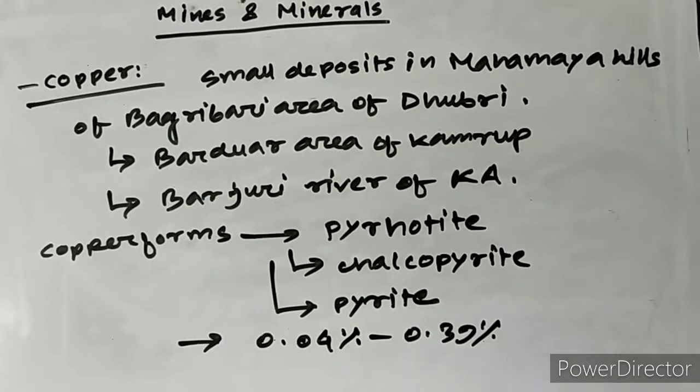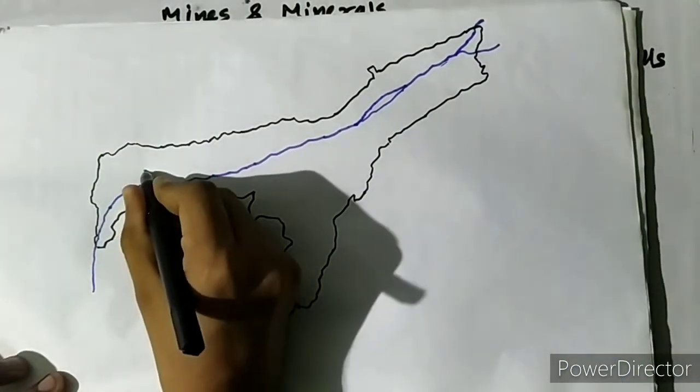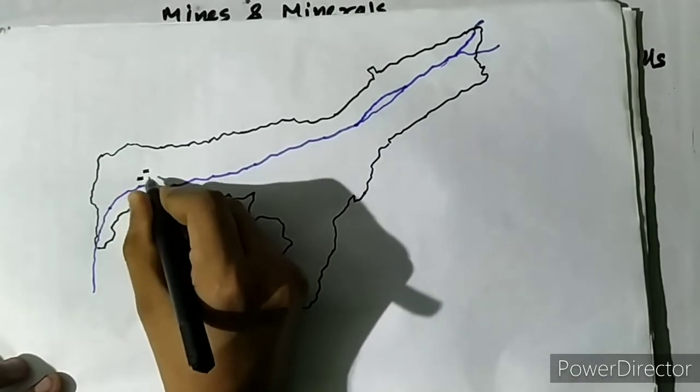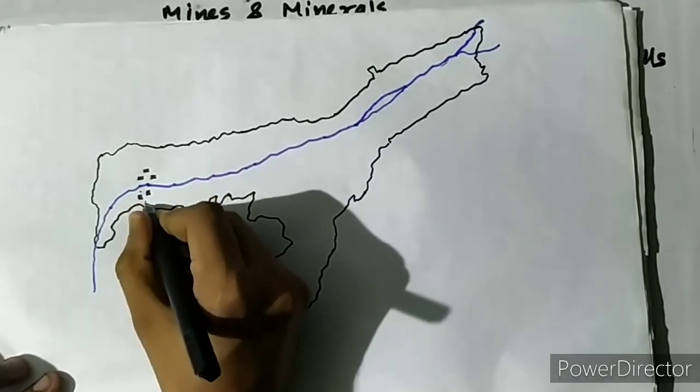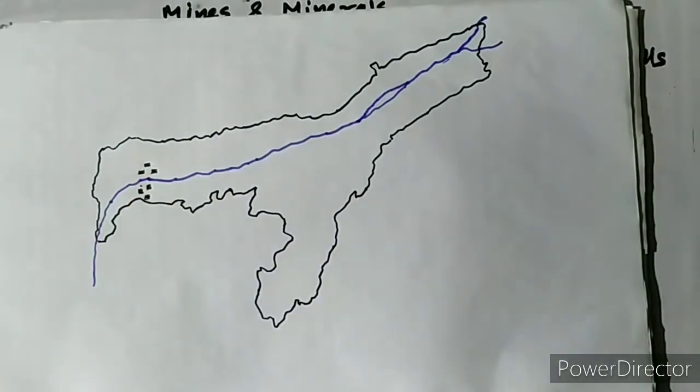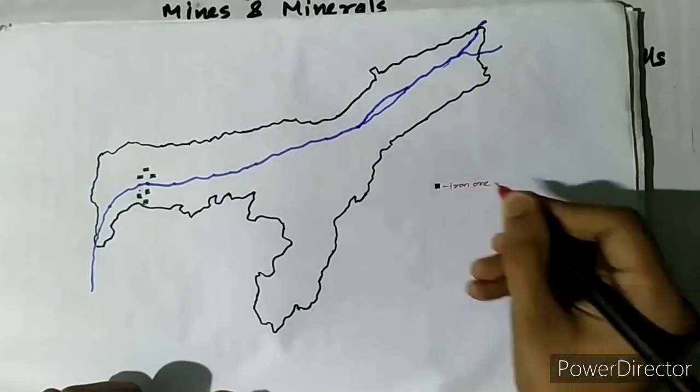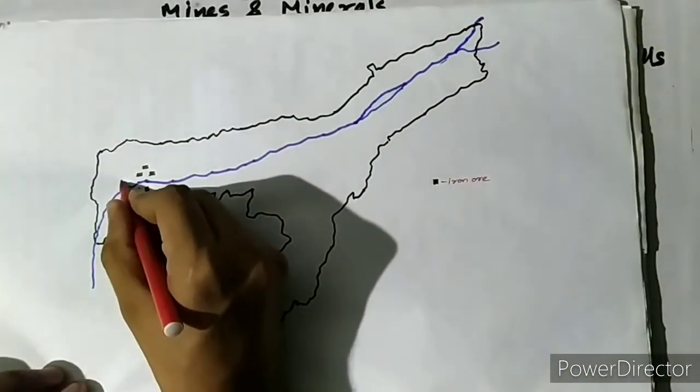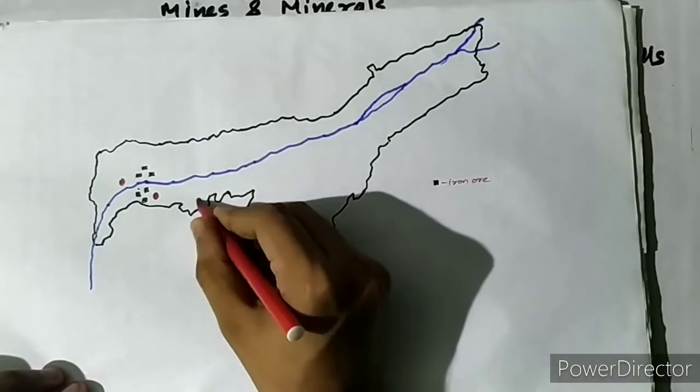I have tried to indicate these places in the map of Assam so that you can get a proper idea about these sites. These are the sites I have drawn in black color showing the locations where iron ore is found, and I have also shown the areas where copper is found.